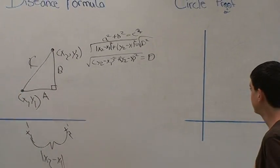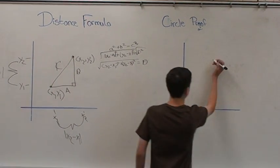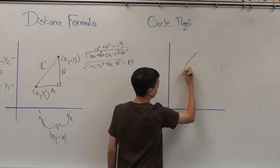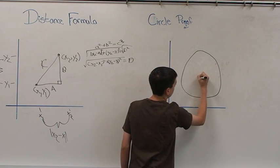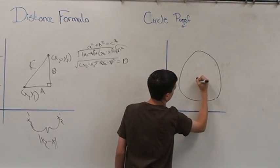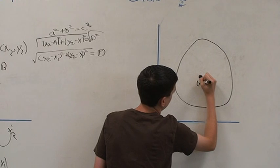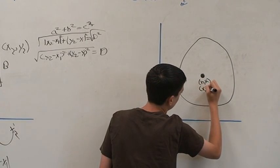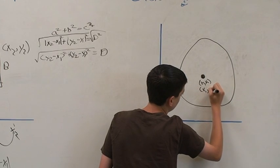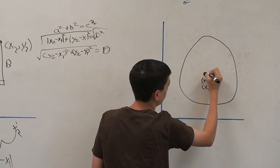From there, we'll do a general form of a circle. The general center of a circle is usually denoted as h, k. H representing the x1 value, k representing the y1 value. From the center, out comes a radius.